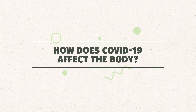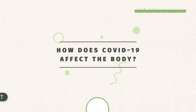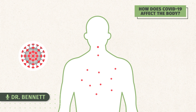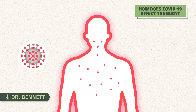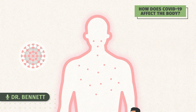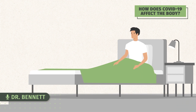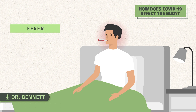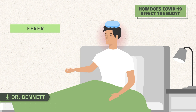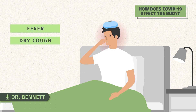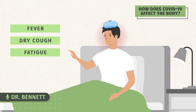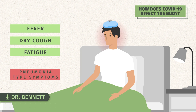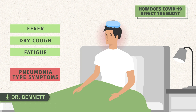How does COVID-19 affect the body? When the human body is first infected, we develop an innate immune response. One of the primary defense mechanisms our body elicits is fever. Eighty-eight percent of infectious cases that develop symptoms have fever. They also develop dry cough, fatigue, and ultimately can progress to severe viral pneumonia-type symptoms.